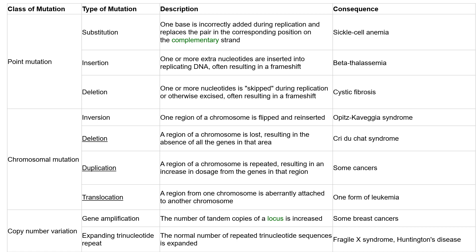Moving to chromosomal mutations: duplication is where a region of the chromosome is repeated, resulting in increased gene dosage from genes in that region, which can lead to some types of cancers. Translocation is where a region from one chromosome is attached to another chromosome and can result in leukemia. For copy number variation, gene amplification — where the number of tandem copies of a locus is increased — can result in breast cancer. Expanding trinucleotide repeats are another form; Huntington's disease is a famous example, where the normal number of repeated CAG sequences is expanded, repeating three times or more.